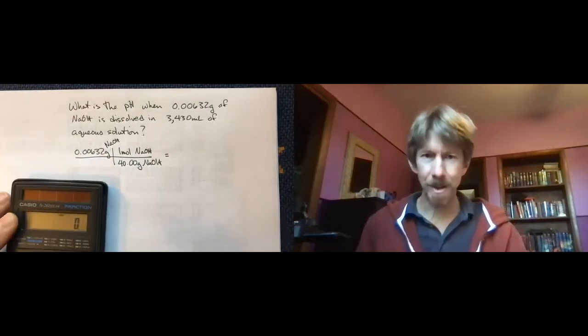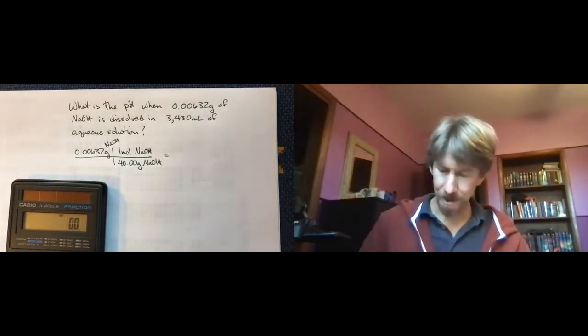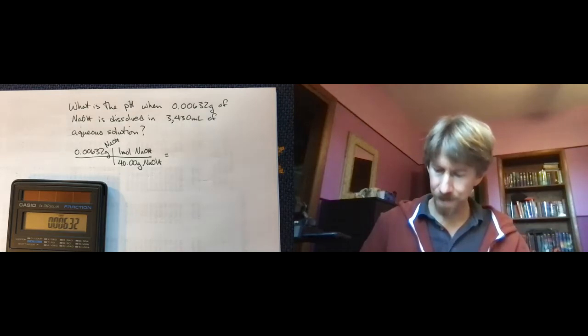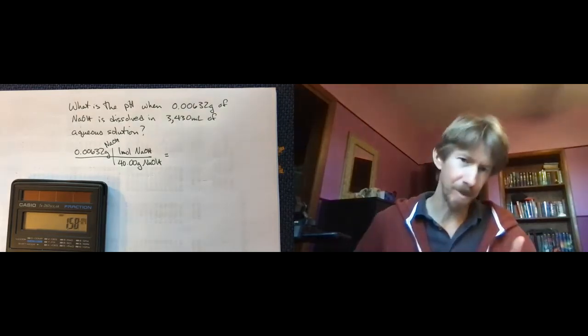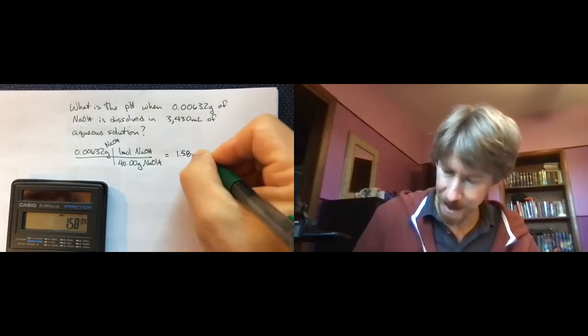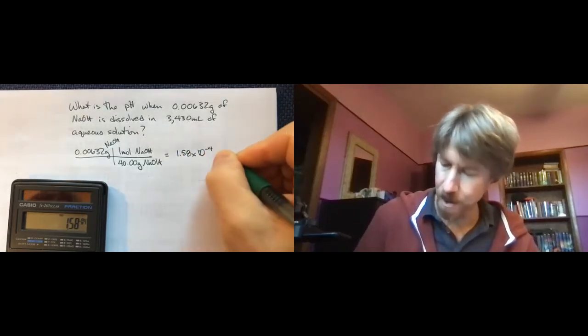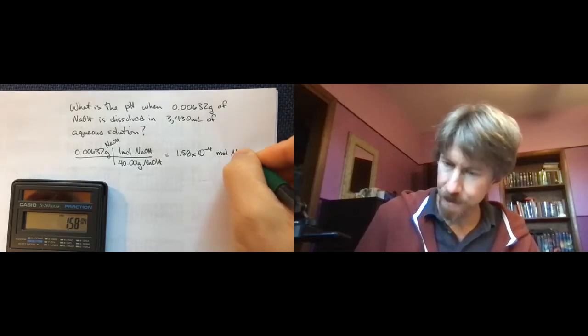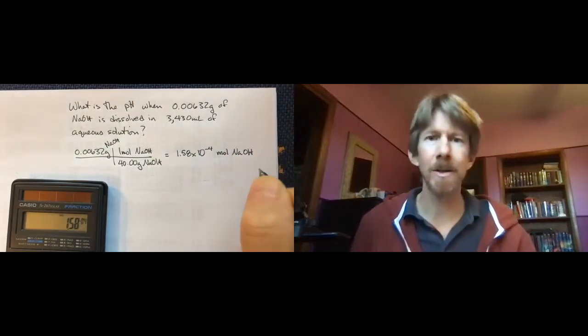That'll be my first part here. So 0.00632 divided by 40.00 is 1.58 times 10 to the minus 4 moles sodium hydroxide.